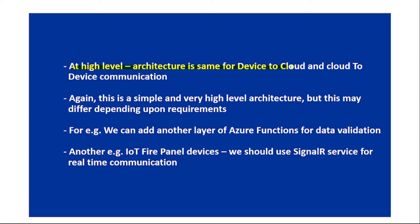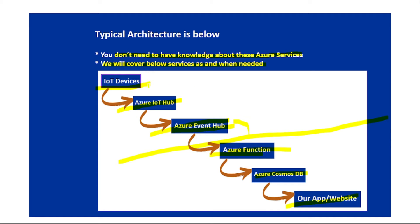At a high level, the architecture is the same for both device-to-cloud and cloud-to-device communication. Here we discussed communication from IoT devices to the cloud, but the architecture for communication from the cloud — that is, IoT Hub to device — is also the same. For example, if you want to send a message to a device from IoT Hub, or call a direct method on a device, the same pattern applies.